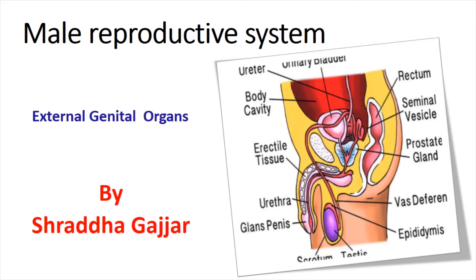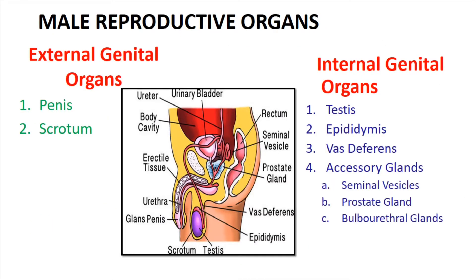Hello guys, today I am going to teach you about the male reproductive system. In the male reproductive organ, there are two parts. First one is the external genital organ, and second one is the internal genital organ.